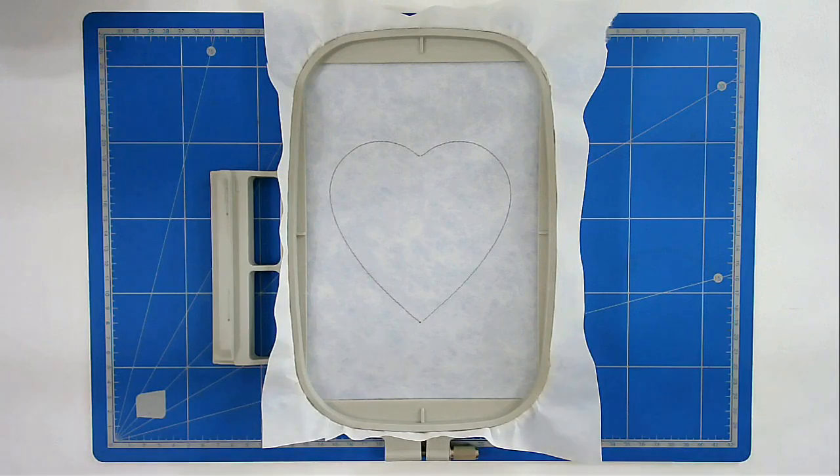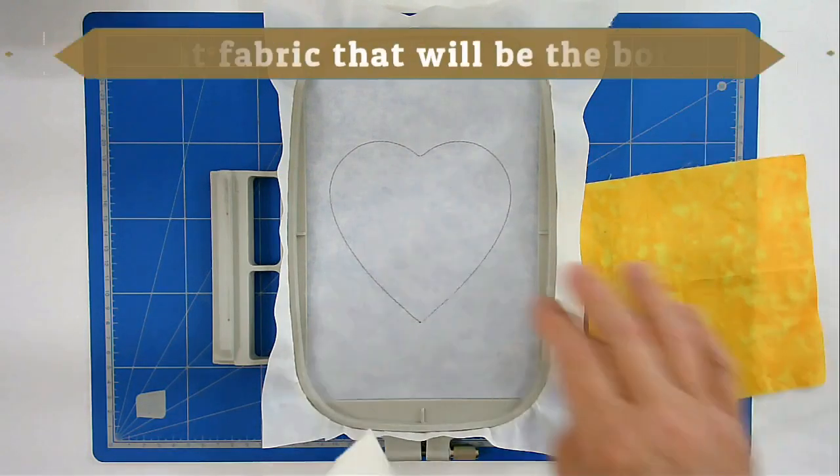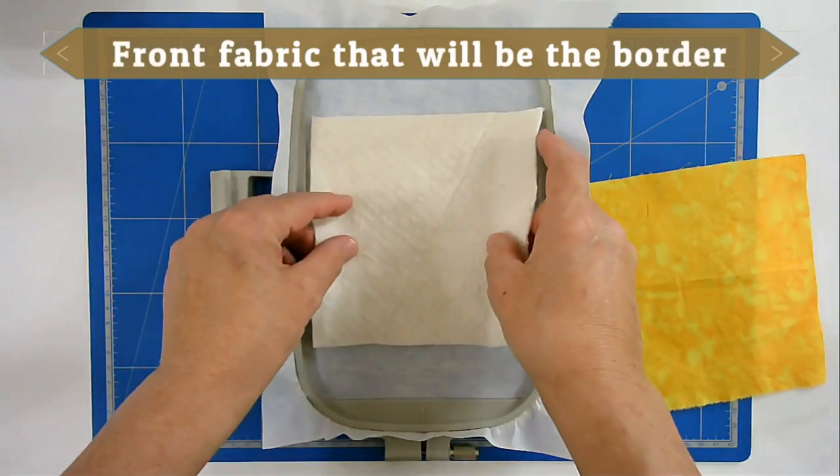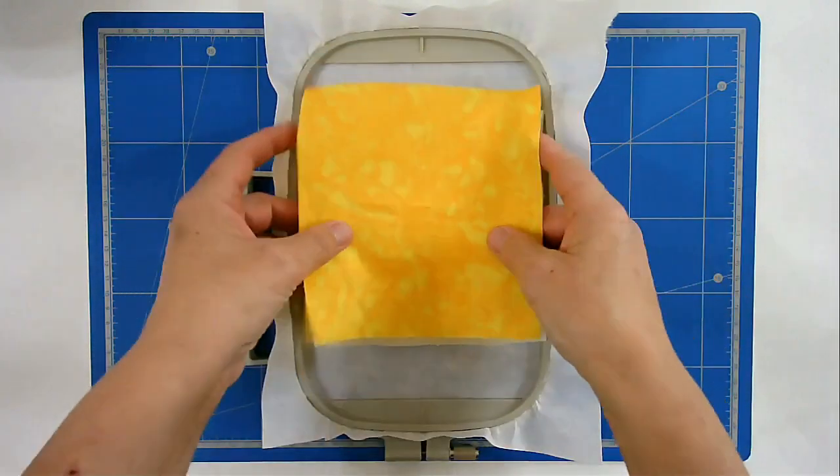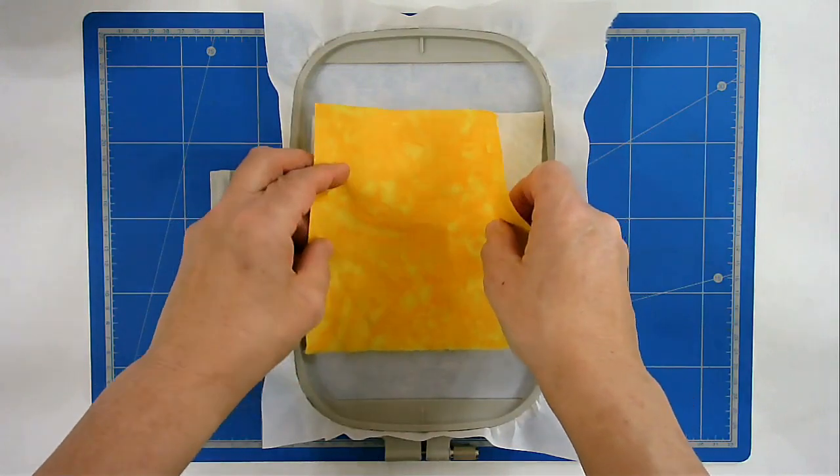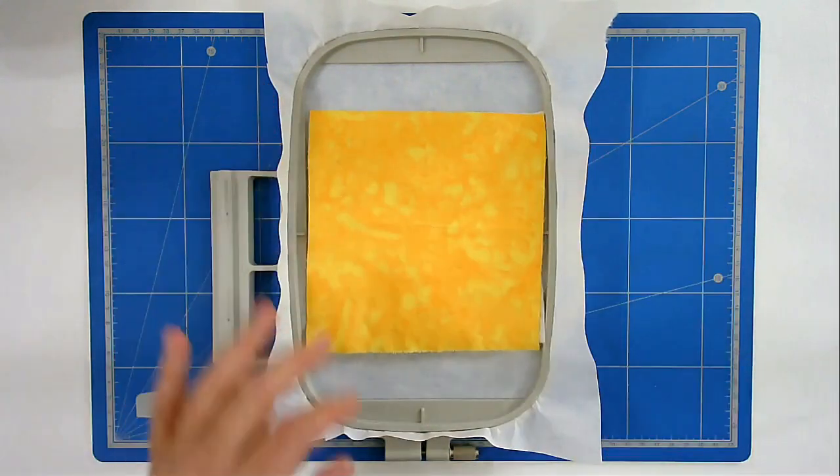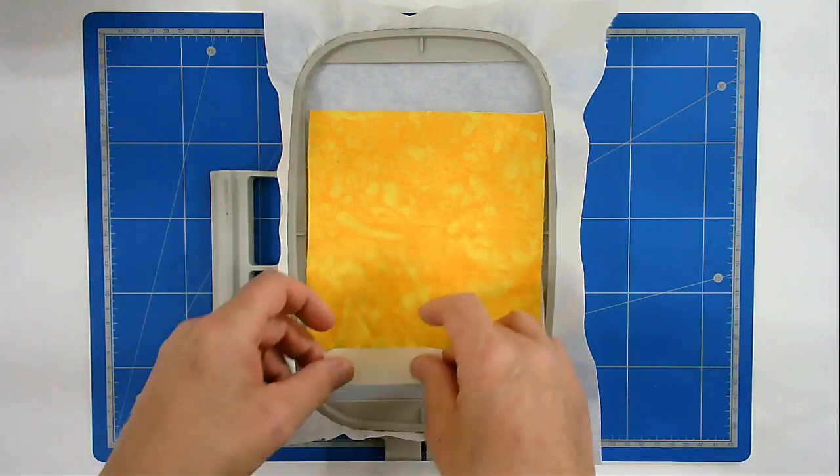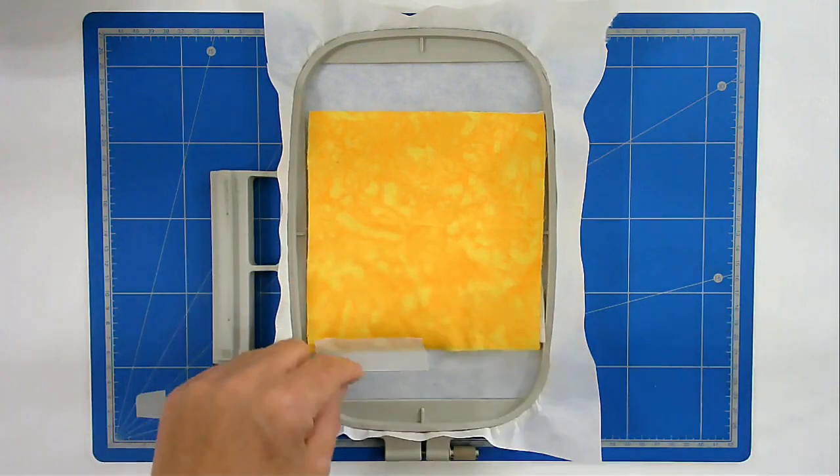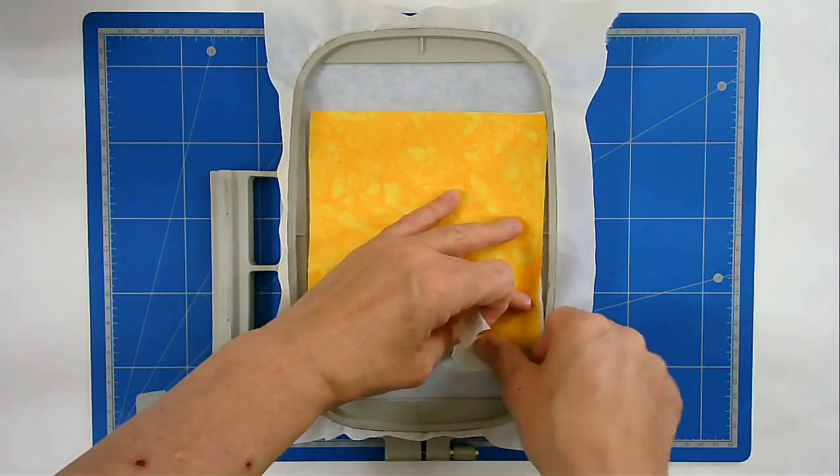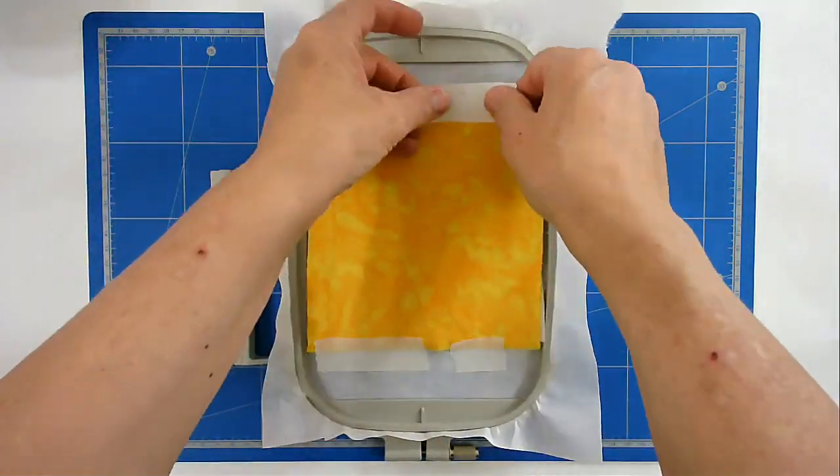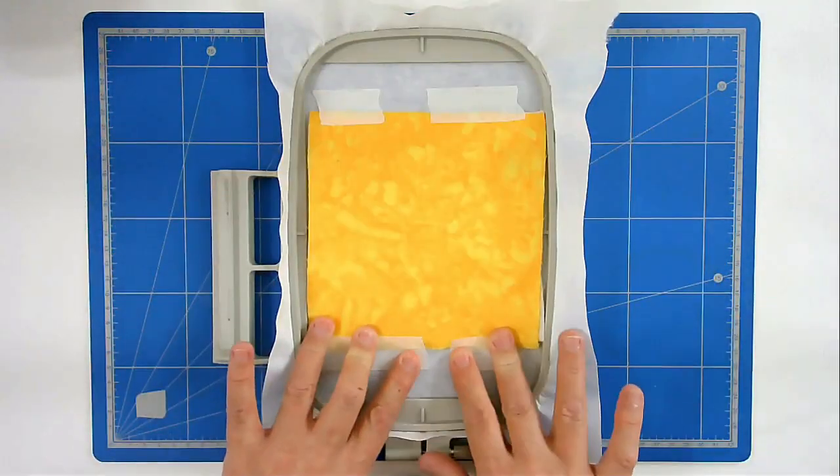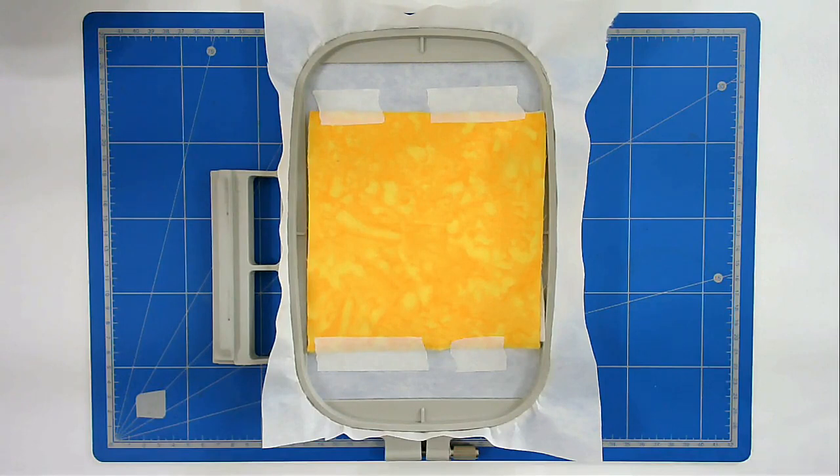I'm now going to place my batting and my fabric over the outline. And I'm going to tape it in place so that it doesn't move during stitching. I'll now pop that in my machine and stitch round number two. And that's going to secure the fabric and the batting.